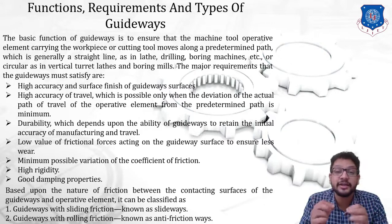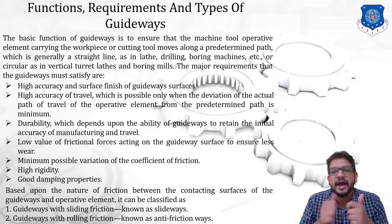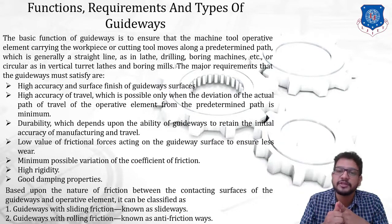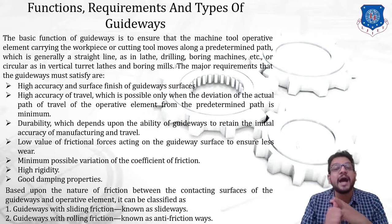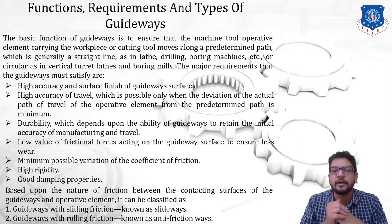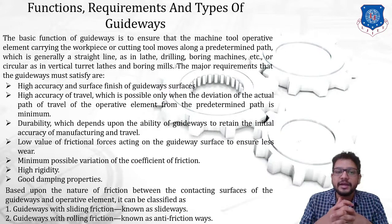In case of a lathe machine, drilling machine, or boring machine the path is a straight line, and in some cases guideways are circular, specifically in vertical turret lids and boring machines. Now, what are the major requirements of a guideway? The first major requirement is high accuracy and surface finish of the guideway surface. The guideway should be machined in such a way that it has a good surface finish so that no jerk or vibration is produced while moving the operative elements. Second, high accuracy of travel is required, which is possible only when the deviation of the actual path of travel of an operative member from a predetermined path is minimum. Next is durability, which depends upon the ability of a guideway to retain the initial accuracy of manufacturing and travel.